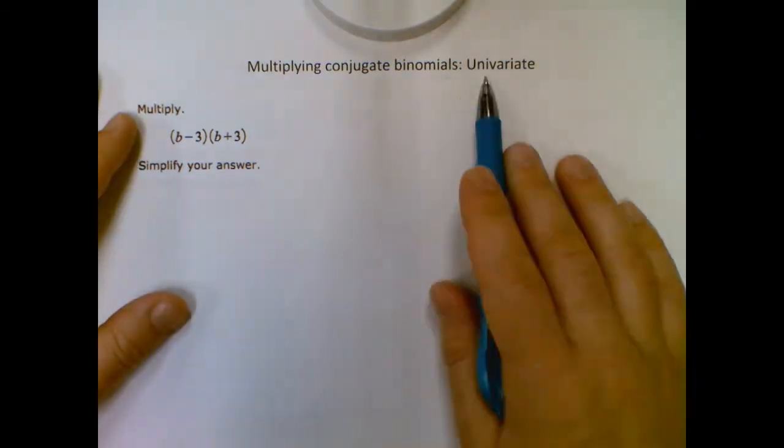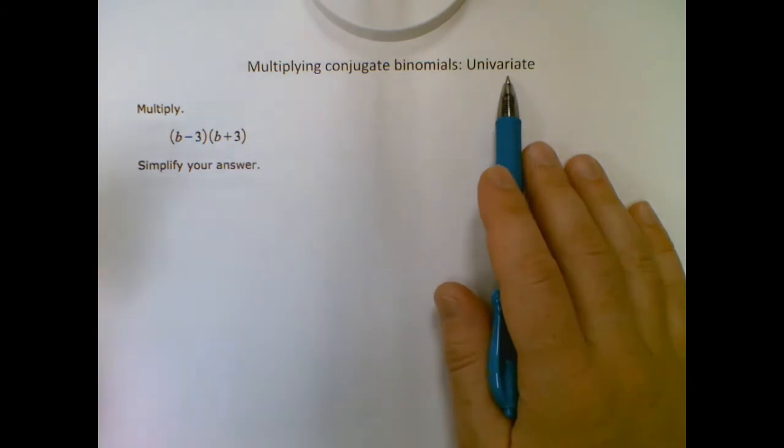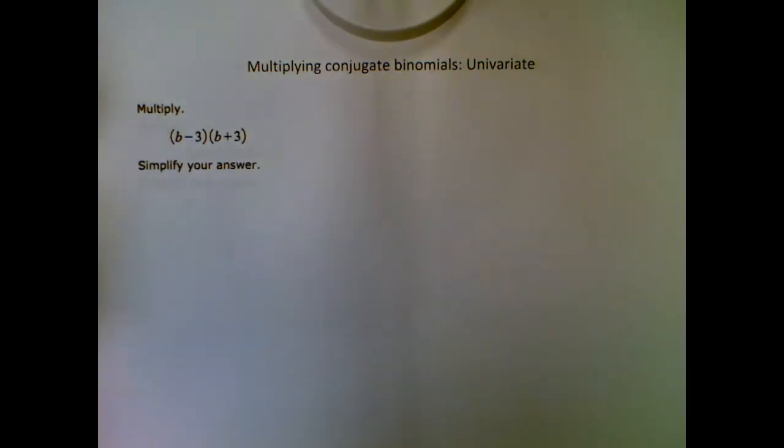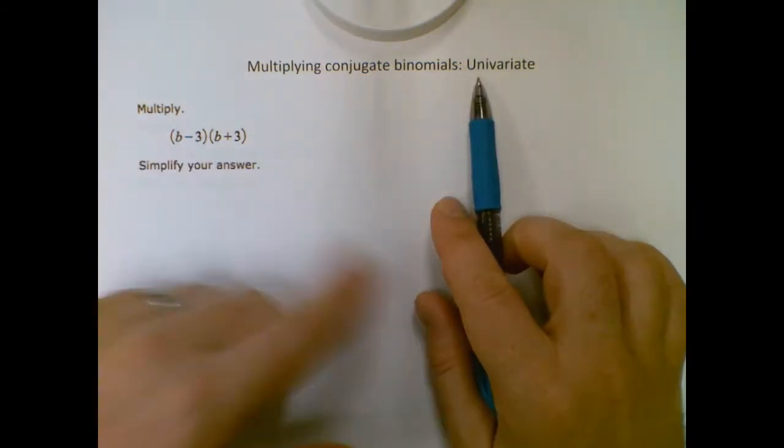So all that means with the univariate part is there's only one variable. So in this case, we only have B. It could be an X, it could be a Y, it could be an A, it doesn't matter. It just means all of the ones in the problem are the same.